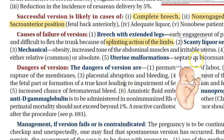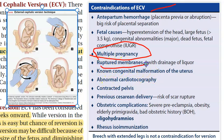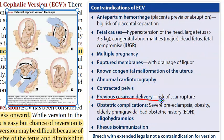Contraindications of external cephalic version: multiple pregnancy, ruptured membranes where amniotic fluid is leaking, contracted pelvis — because the baby won't come out vaginally anyway and cesarean is needed. Essentially, all indications for cesarean section are contraindications for ECV. Oligohydramnios means you cannot turn, and a previous cesarean delivery carries risks of scar rupture.